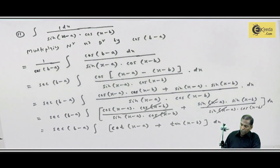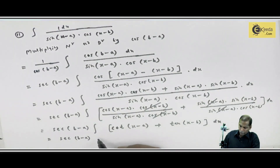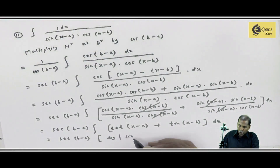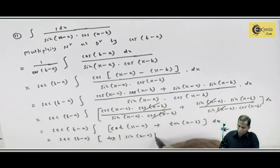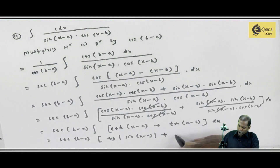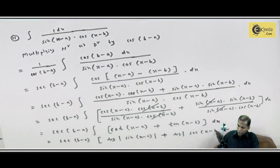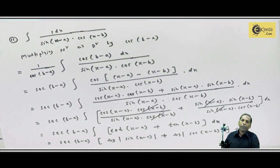So finally it is equal to sec(b minus a) into: the integral of cot gives log mod sin(x minus a), mod complete, plus the integral of tan gives log mod sec(x minus b), mod complete. And finally we write plus c.